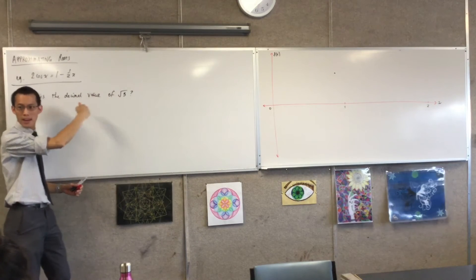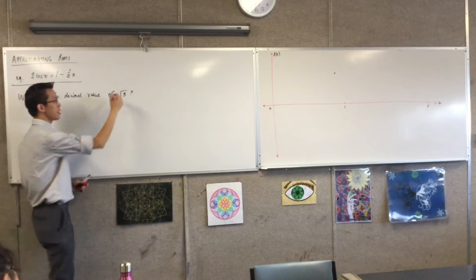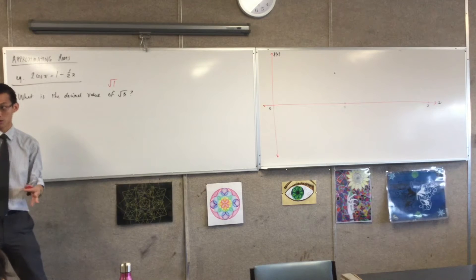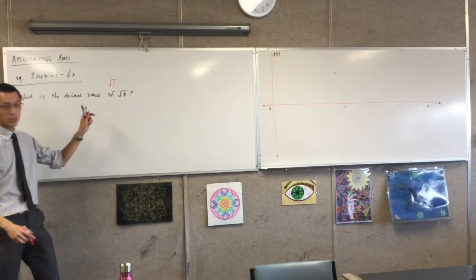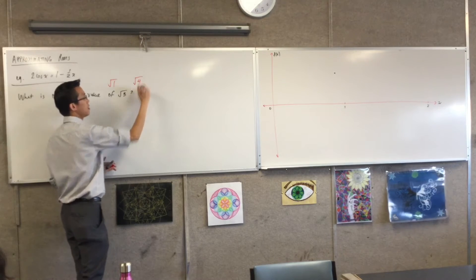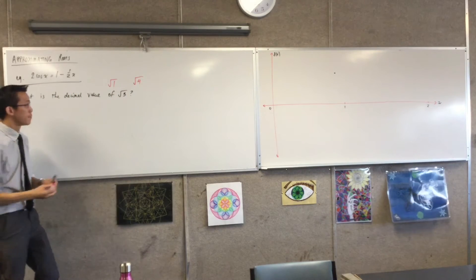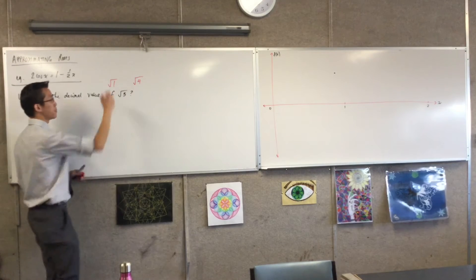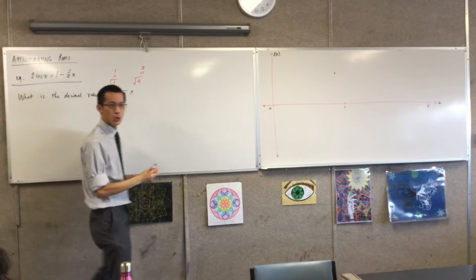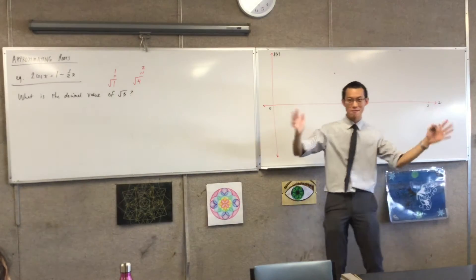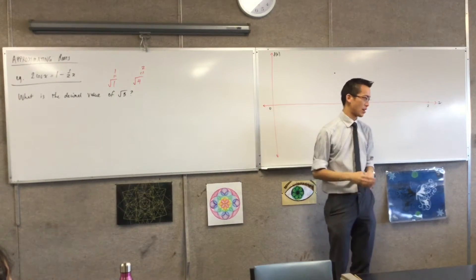The nearest square number beneath three is one, right? That's the closest square number less than three. And the closest square number that's bigger than three is four, right? So, clearly, root three must be somewhere between these two numbers. Do you agree with that? So, that means it's between one and two, okay? So, I know I've got to be in there, but that's a really big range. So, how do I get any closer, right?